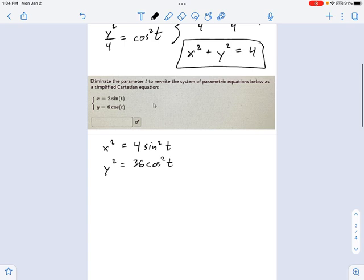Now, let's isolate the sine squared and the cosine squared. Okay, so we get x squared over 4 equals sine squared t. We get y squared over 36 equals cosine squared t.